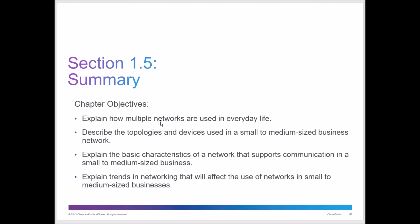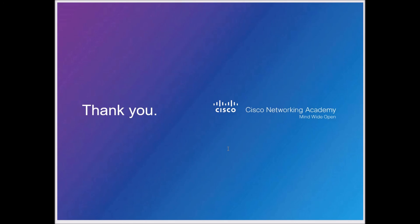In summary, these two parts of chapter one looked at how multiple networks are used in everyday life, the different types of topologies both physical and logical, the types of devices used in medium and small businesses, the basic characteristics of networks that support communication, and the trends in networking that will affect us into the future. Thank you for watching — click like, subscribe, leave a comment below, and I hope this information was helpful.